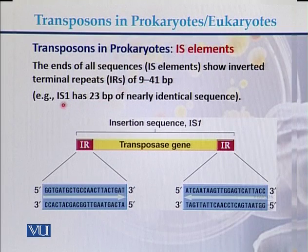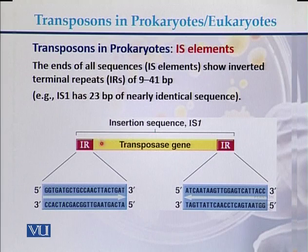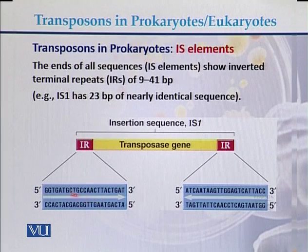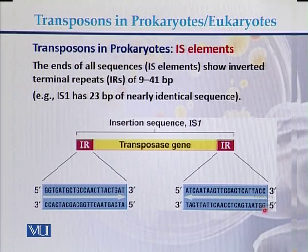For example, IS1 has 23 base pairs of inverted repeats. The diagram of an insertion sequence shows a transposase gene in the middle, with inverted repeats on both sides. The inverted repeat sequence reads 'GG-TGA' on one end and the corresponding sequence on the other end, present on both ends of the IS element.